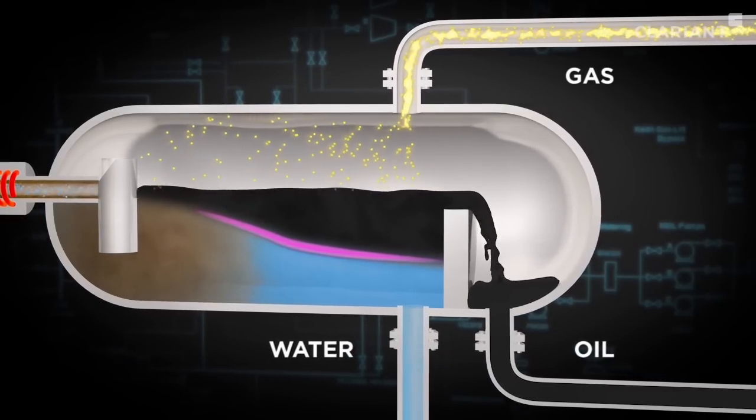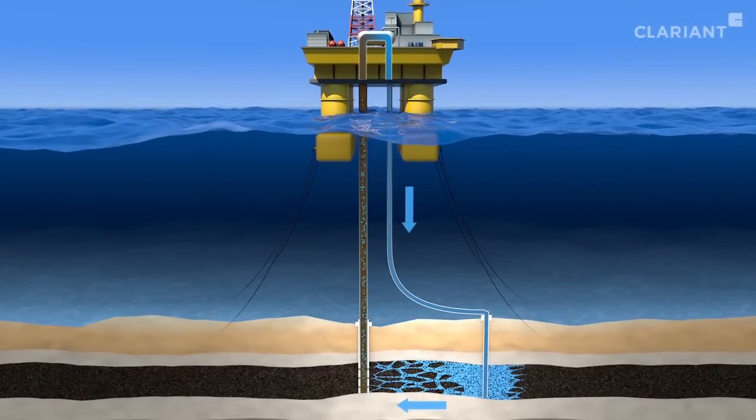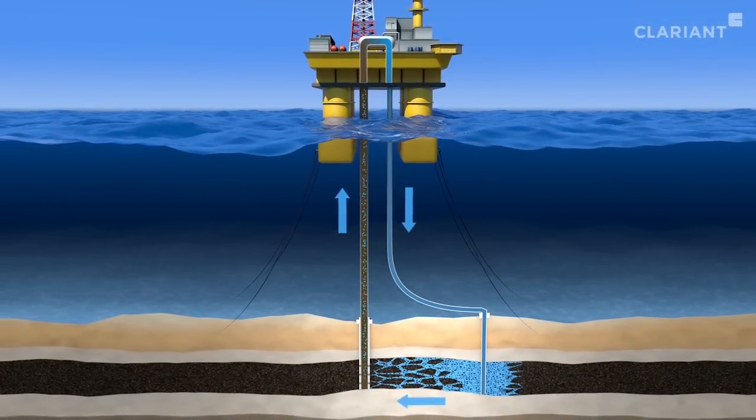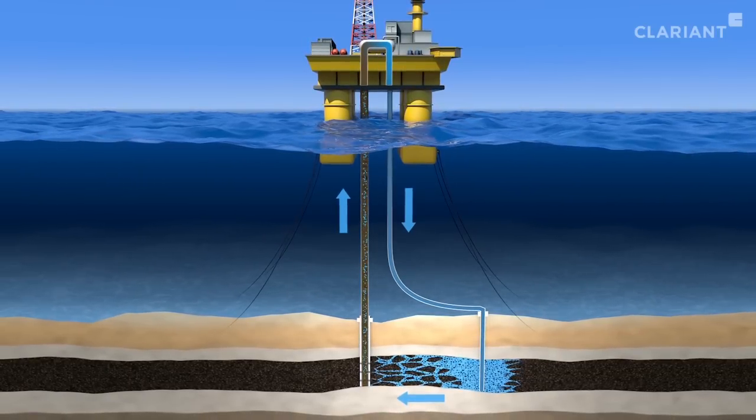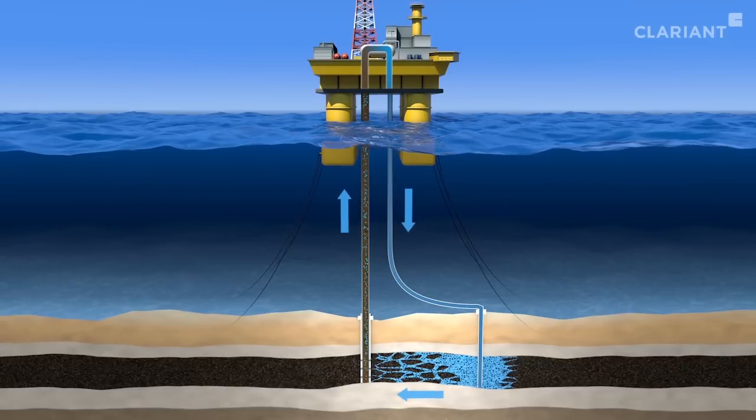The produced water, once separated, is further processed until it's had all but a few parts per million of oil removed, and then it's injected back into the oil reservoir for further improved oil recovery. This is termed produced water re-injection.